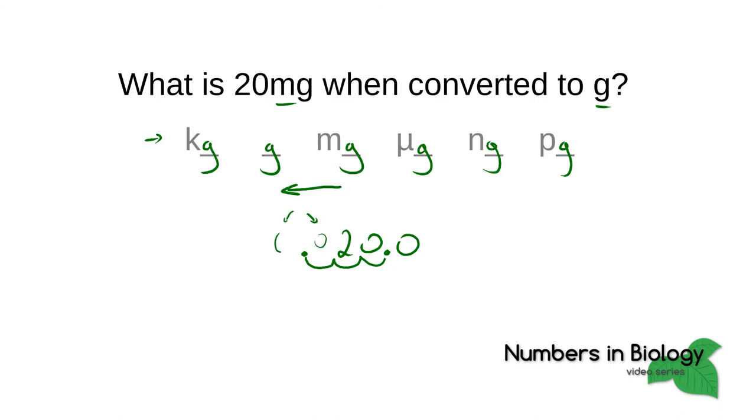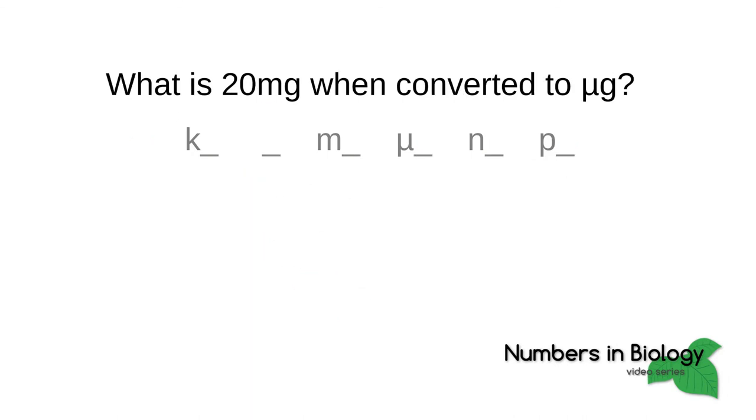Let's try another one. What is 20 milligrams when converted to micrograms? Okay, so in this case we're interested in milligrams and micrograms on this scale. We are going to be moving our decimal point to the right. We're starting with 20.0 and let's move the decimal point by three places to the right: one, two, three. Fill in the extra zeros now and we get 20,000 micrograms. That's the correct answer.